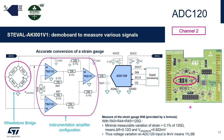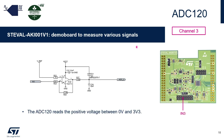Note that the Wheatstone bridge is not directly on the EVAL board — it is external, but you can attach it via the connector located here. On channel 3, the op-amp configuration is used to rectify the external voltage into a positive range from 0V to 3.3V so that it can be used by the ADC. The input for the external signal is located on this connector.